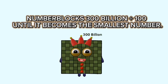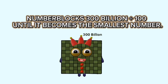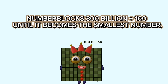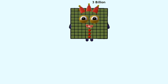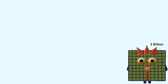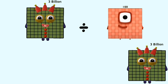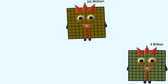Number blocks: three hundred billion divided by one hundred, until it becomes the smallest number. Three hundred billion divided by one hundred equals three billion. Three billion divided by one hundred equals thirty million.